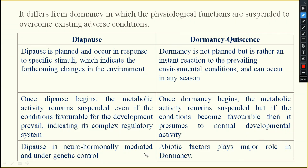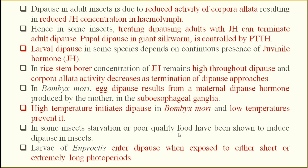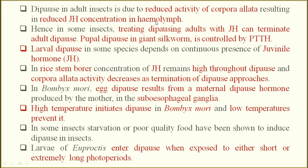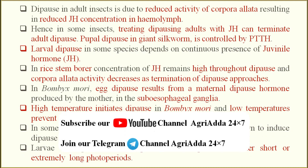Diapause is neuro-hormonally mediated and under genetic control. Dormancy is always an abiotic stress response with instant reaction. Some hormonal changes can also be used to disrupt diapause in insects.